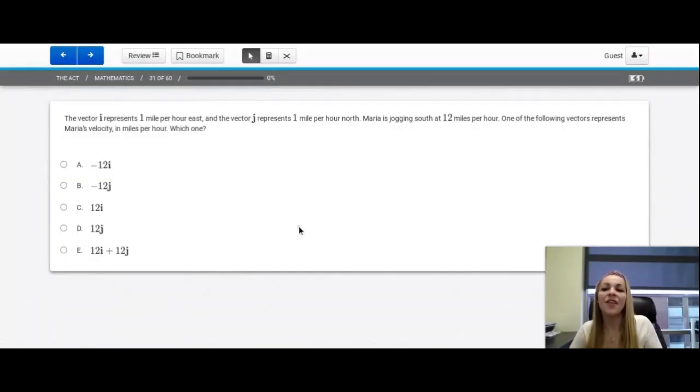Question number 31. The vector i represents one mile per hour east, and the vector j represents one mile per hour north. Maria is jogging south at 12 miles per hour. One of the following vectors represents Maria's velocity in miles per hour. Which one?